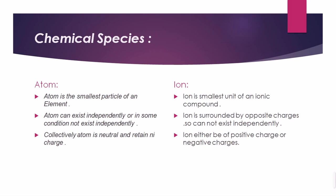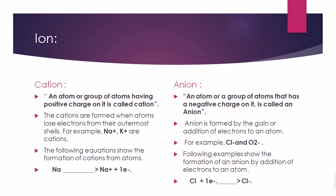An ion is the smallest unit of an ionic compound. It is formed from the ionic compound, and may be positive or negative. An ion is always surrounded by its opposite charge. If the ion is positive, it will be called a cation; if the ion is negative, it will be called an anion.